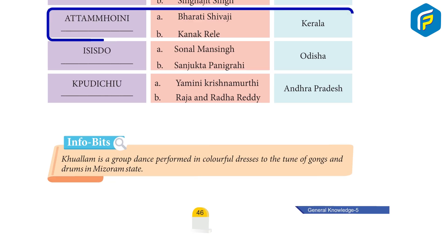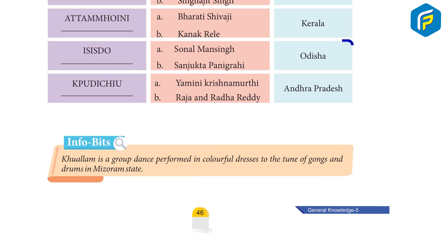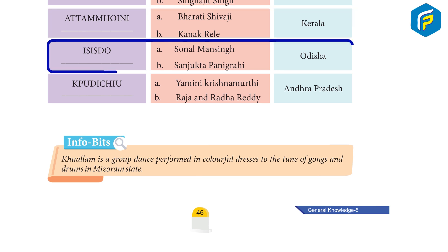Dance: Mohini Attam. Artists: Bharti Shivaji, Kanak Rele. State: Kerala. Dance: Odissi. Artists: Sonal Man Singh, Sanjukta Panigrahi. State: Odisha.